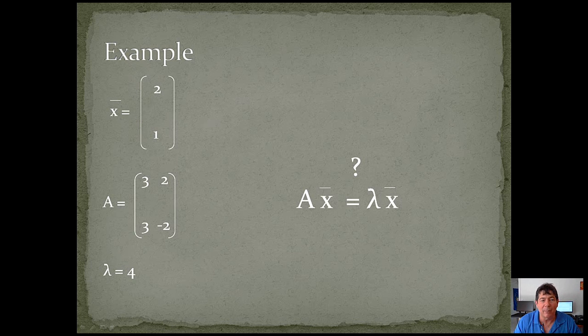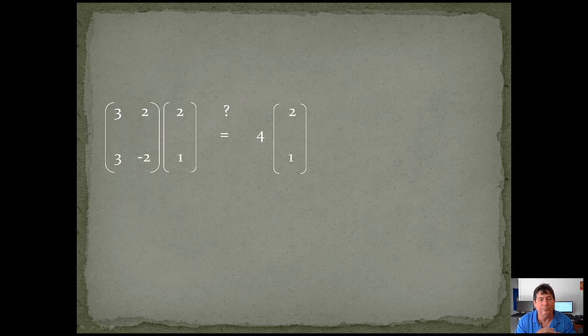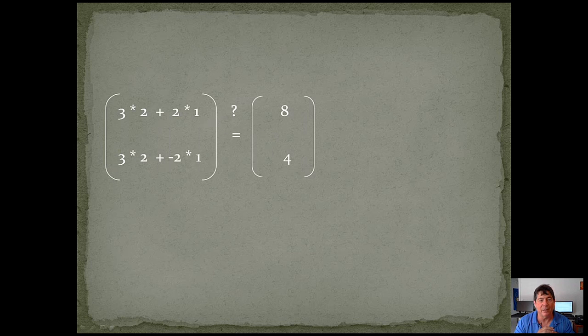And to find out, we just need to set up the problem and do a little math. So on the left side you'll see A times x. And we want to know, does that equal the eigenvalue of 4 times x? So we just multiply things out.